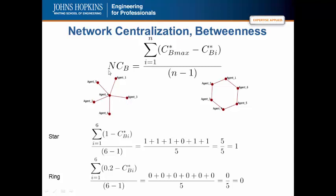None of the peripheral nodes have any betweenness centrality at all. Thus, the numerator is 1 plus 1 plus 1 plus 0 plus 1 plus 1, which gives you 5 over 5, or a betweenness centralization of 1. In a similar fashion for the ring network, the betweenness centrality value is 0.2 for every node in the network. Thus, this becomes 0 over 5, or 0. Note that here we're using the scaled betweenness centrality value.